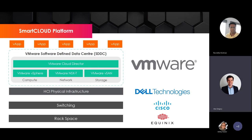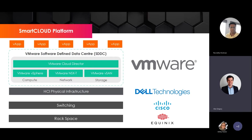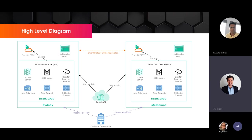Our architecture is built on VMware Cloud Director — that's the interface you would see and utilize for your day-to-day interactions. Underneath that, it's built on the Dell Technologies VxRail platform. Our switching is provided by Cisco, and all our infrastructure sits in Equinix, whether in our Sydney or Melbourne data center. It's hyperconverged infrastructure, so all storage sits in those servers. Our Smart Protect platform uses SmartPath — The Missing Link's ISP connectivity — for replication.